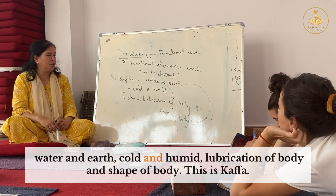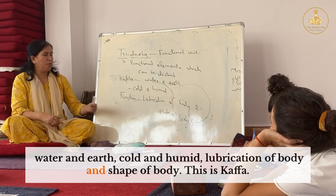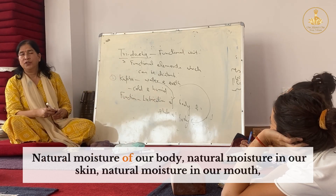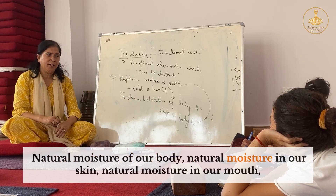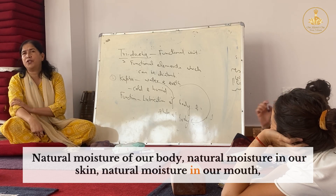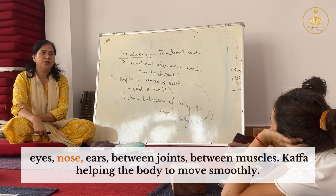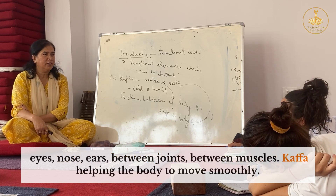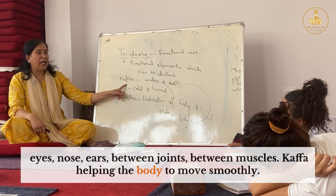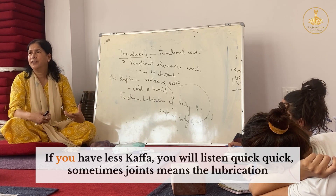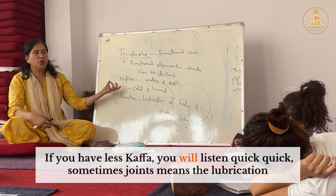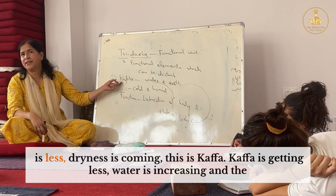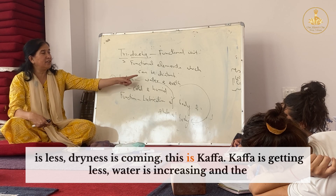Water and earth, cold and humid, lubrication of body and shape of body — this is Kapha. The natural moisture of our body: natural moisture in our skin, in our mouth, eyes, nose, ears, between joints, between muscles. Kapha helps the body to move smoothly. If you have less Kapha, you will hear a clicking sound in your joints — the lubrication is less, dryness is coming. This is Kapha.